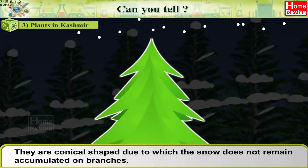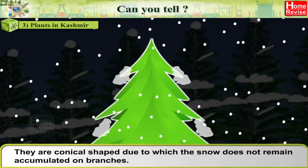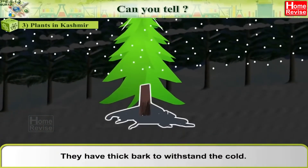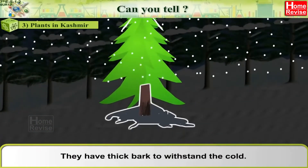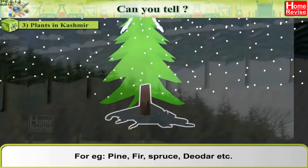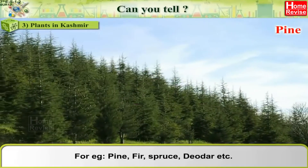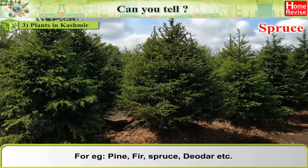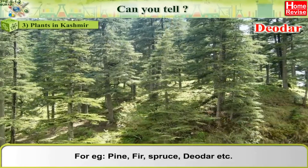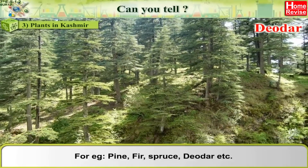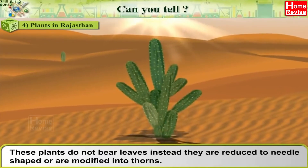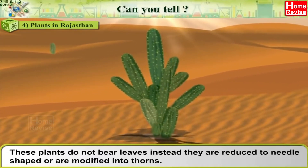Plants in Kashmir: they are conical shaped, due to which the snow does not remain accumulated on branches. They have thick bark to withstand the cold. For example, pine, spruce, deodar, etc.